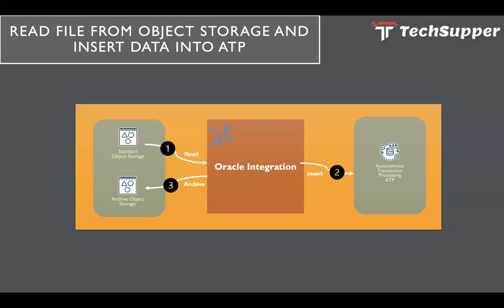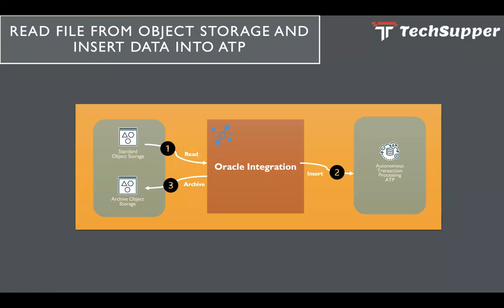I'm considering I have two buckets — one as a standard object storage and second as an archive object storage. From Oracle Integration I am going to read the files — maybe two files, three files, whatever files are there at a particular moment. I will process those files, take the data from them and insert into the ATP. Once the data is inserted, I will archive those files into the archive bucket and delete them from the standard object storage.